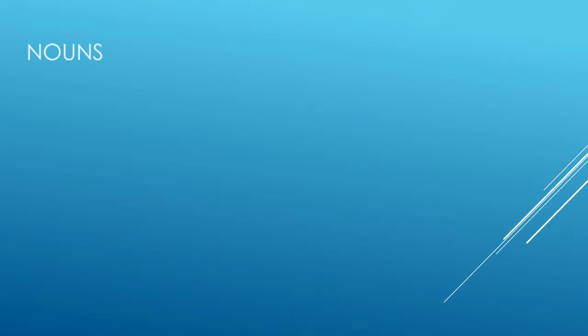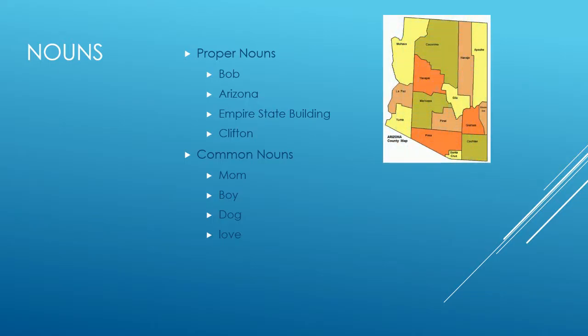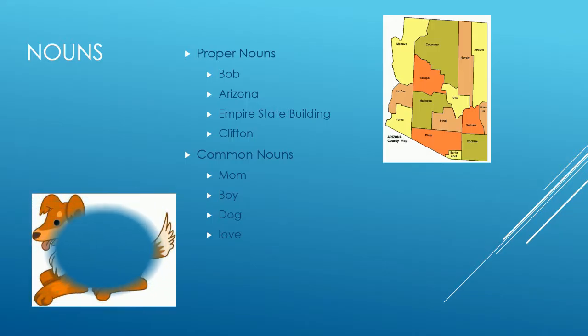Nouns can be broken down into common or proper nouns. A common noun is a general or basic name. A proper noun is a specific name. Common nouns are not capitalized unless at the beginning of a sentence. Proper nouns are always capitalized no matter where they are in a sentence.